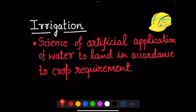Let us start our discussion with the basic introduction. Irrigation is nothing but the science of artificial application of water to the land in accordance with the crop requirement. This means when we artificially apply water to the crop to fulfill its need or requirement, that process is called irrigation.